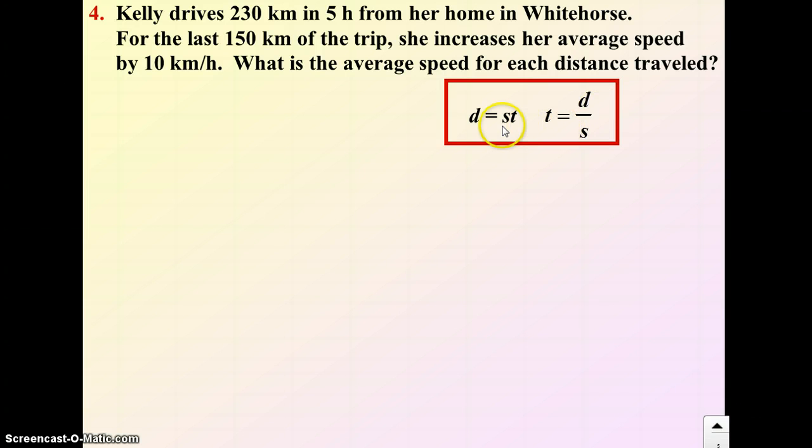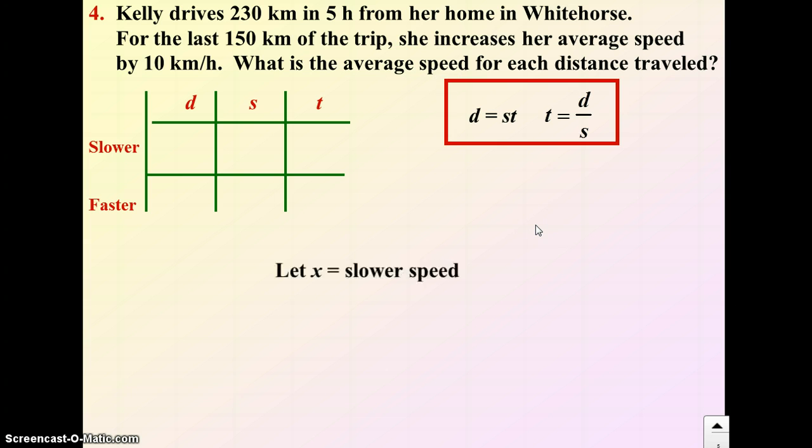With these types of questions, it's nice to make a little chart and fill in the chart. So we're asked to find the average speed. So I'm going to let my variable be for speed. So if I let x equal the slower speed, the faster speed would be x plus 10. Fill that in on our chart. So the slower speed is x, the faster speed is x plus 10.